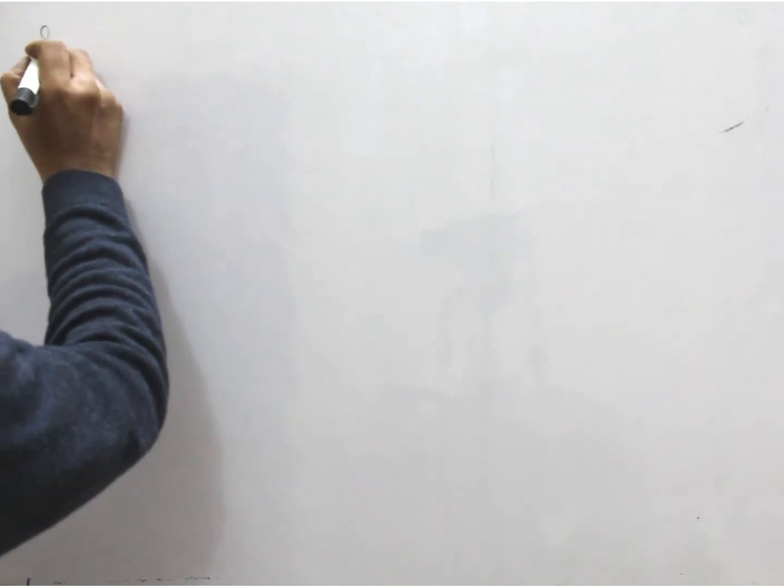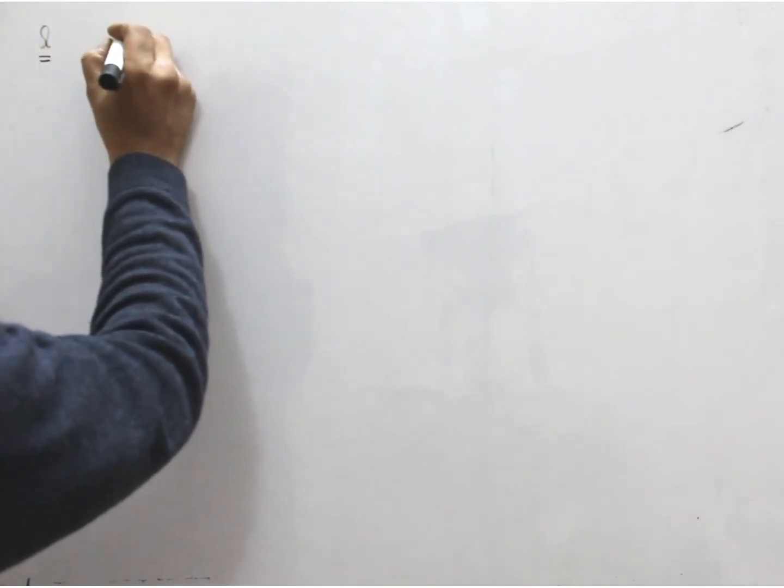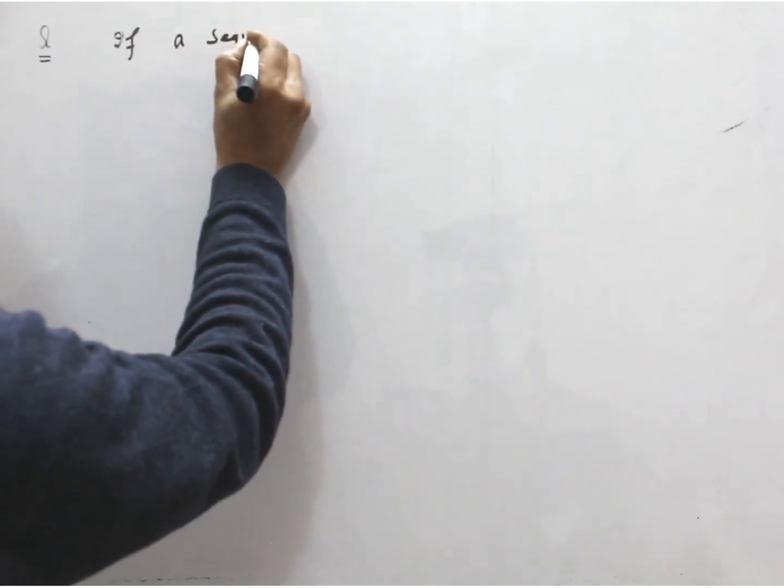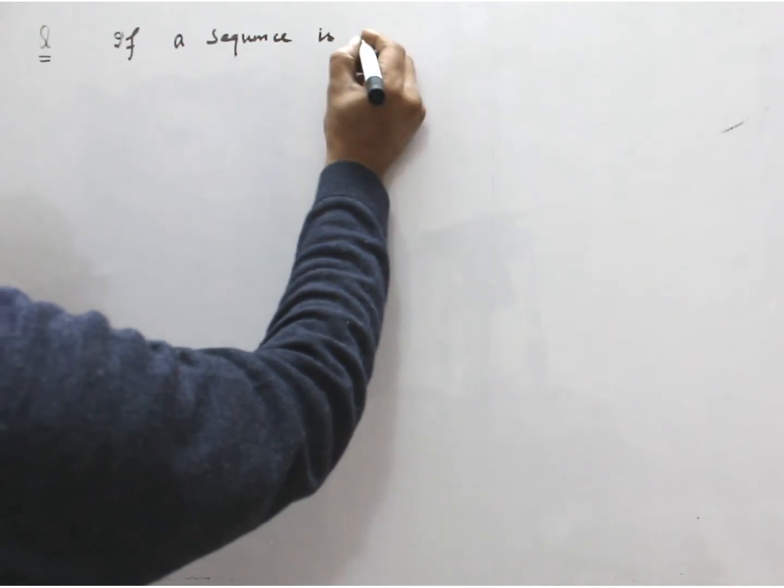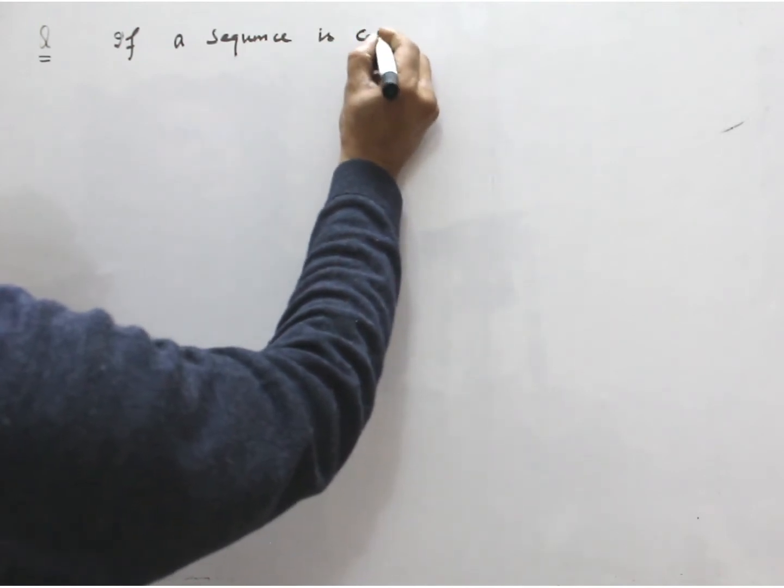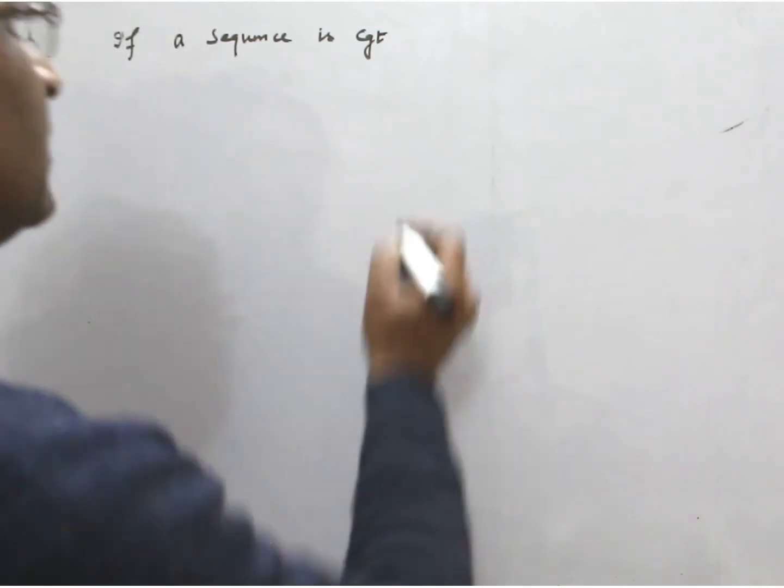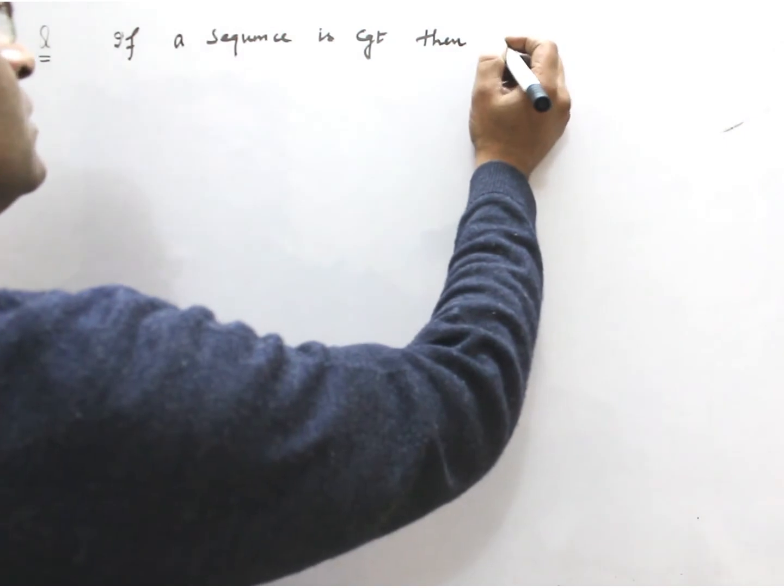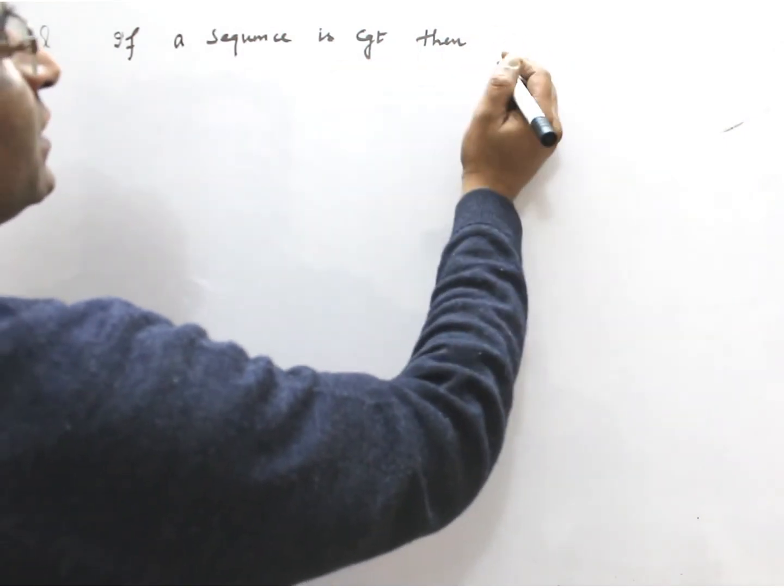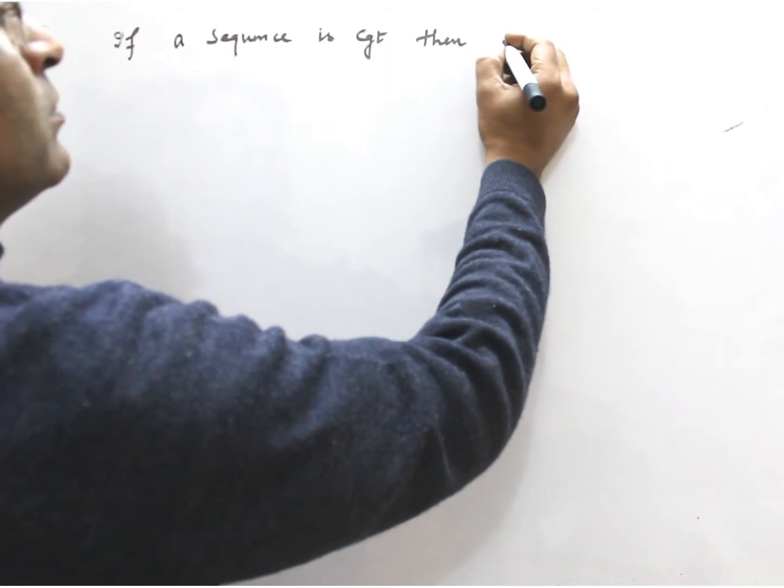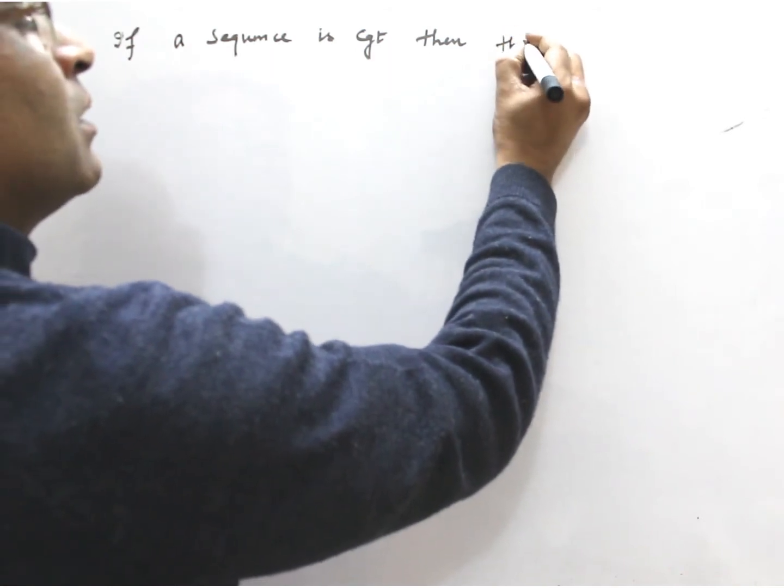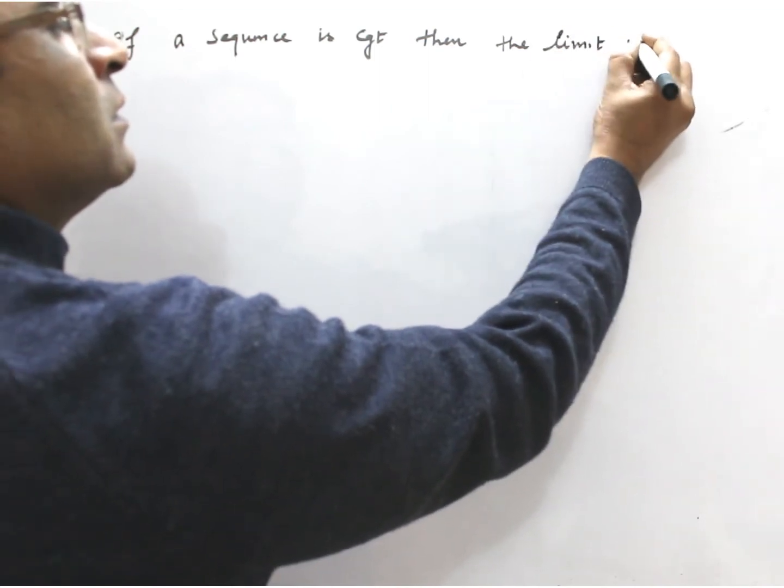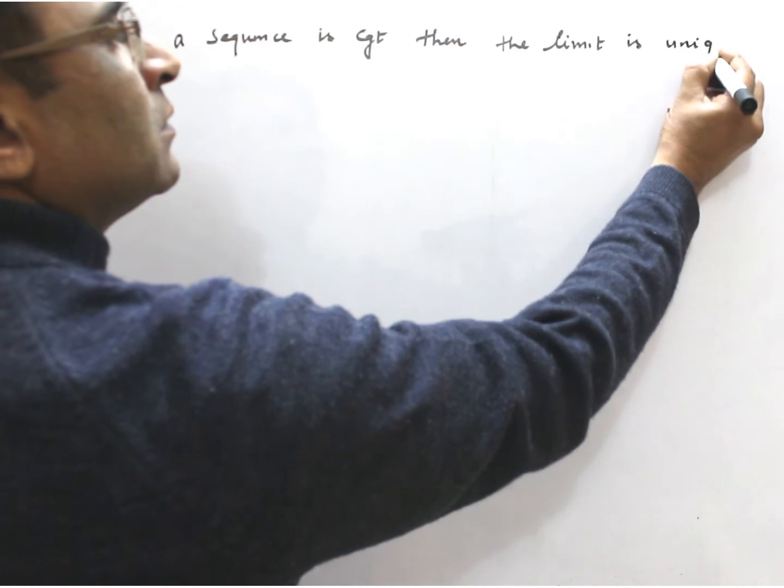Question: If a sequence is convergent, then the limit is unique.